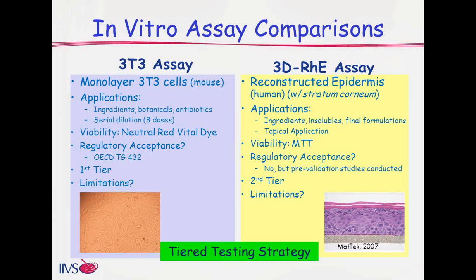With these two assays available, the 3T3 is generally recommended as a first-tier approach depending on the regulatory agency—a negative result may not require additional photosafety testing. Where additional information is needed, such as a positive 3T3 result or when moving from hazard assessment of an ingredient to risk assessment of a final formulation, the three-dimensional assay can serve as a second tier.